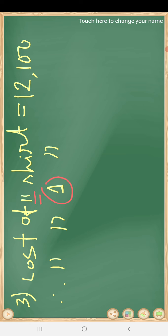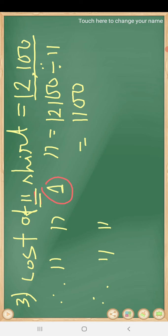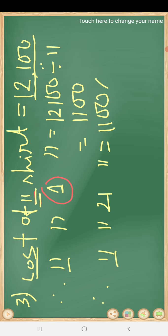But first we find out the cost of one shirt. So we divide: twelve thousand one hundred divided by eleven, and we get one thousand one hundred. In the unitary method, first we divide, then we multiply. Now we need the cost of twenty one shirts, so we multiply one thousand one hundred by twenty one.